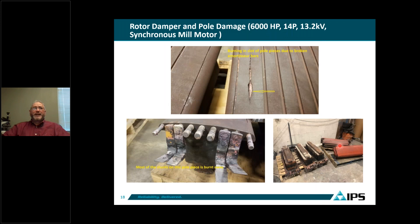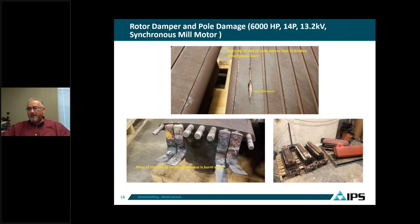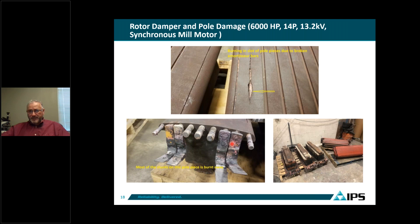If starting limits are exceeded, this is an example of a 6,000 HP, 14-pole, 3.2 kV motor. The damage does not happen on the first start — it accumulates over years of operation. But if motors are never inspected and the start limits are abused, you will see deterioration. For example, burning of the laminations is visible where high current in the bars causes localized overheating. The damper bars shown here are burned out from the tremendous heat generated during excessive starting or overload conditions. This is what happens after many years of repeated starts and overload events.